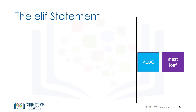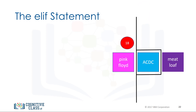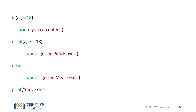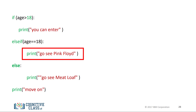The elif statement, short for else if, allows us to check additional conditions if the preceding condition is false. If the condition is true, the alternate expressions will be run. Consider the concert example: if the individual is 18, they will go to the Pink Floyd concert instead of the ACDC or meatloaf concerts. A person of 18 years enters — they are not over 19, so they cannot see ACDC, but as they are 18 years old, they attend Pink Floyd. The syntax is similar: we simply add the statement elif with the condition, then add the expression to execute with an indent.